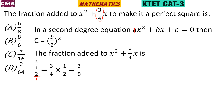So 1/2 multiplied by 3/4 gives us 3/8. Then (3/8)² equals 9/64. The answer is 9/64.